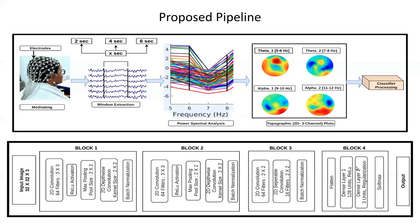The fourth block contains a flatten layer, two dense layers, and a softmax activation function. A dense layer is employed to combine all the features learned from previous layers, where every input is directly connected to the output of the next layer in a feed-forward fashion.